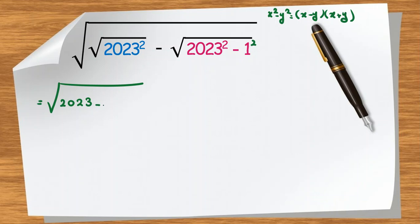Applying the identity with x equal to 2023 and y equal to 1: x minus y gives 2023 minus 1 which is 2022, and x plus y gives 2023 plus 1 which equals 2024.